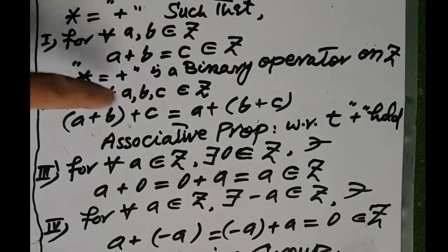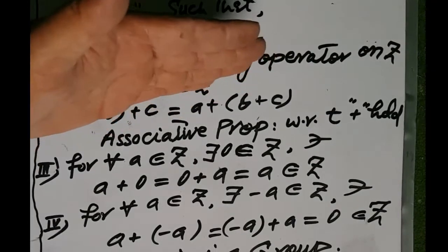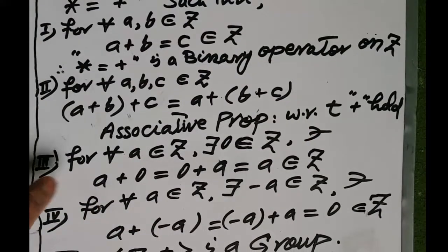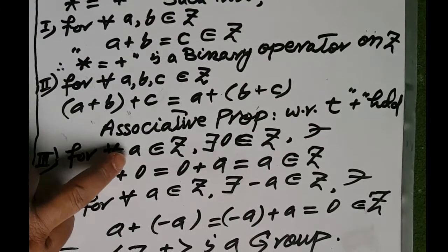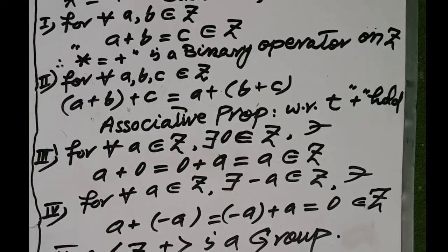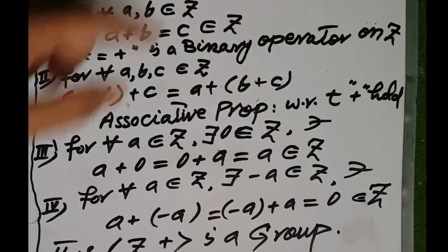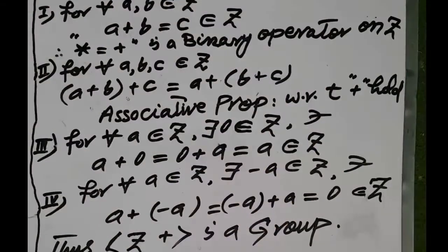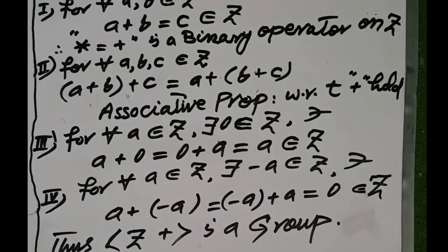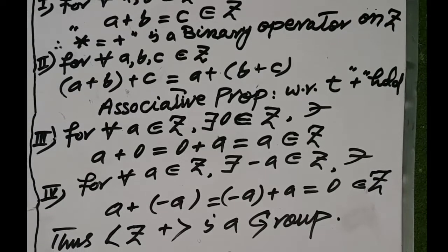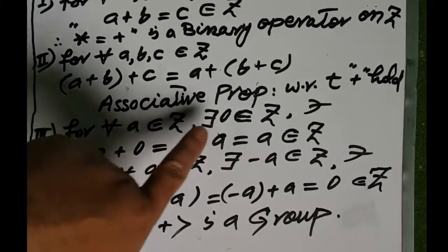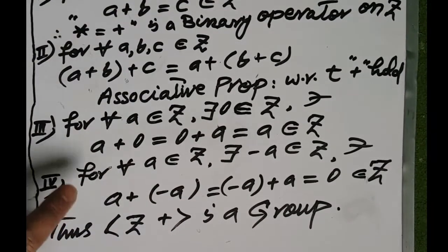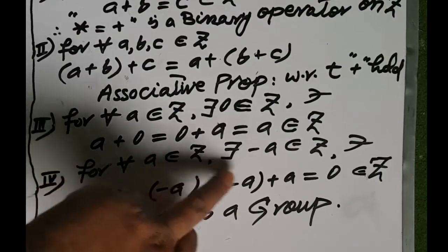That is, the associative property with respect to addition holds in the set Z of all integers. For each element a of Z, there exists an element zero such that a plus zero is equal to zero plus a is equal to a. That is, when we add any integer with zero we get that integer, so zero is the additive identity element in the set Z of all integers.